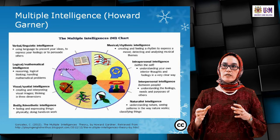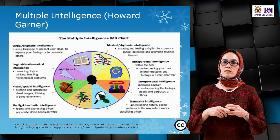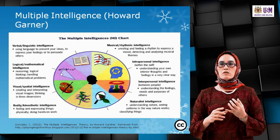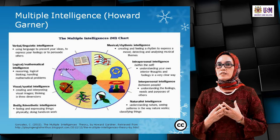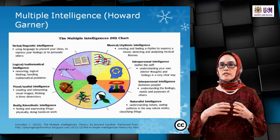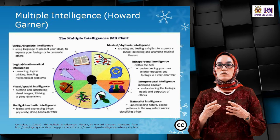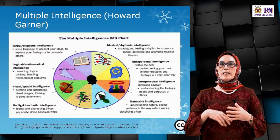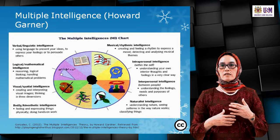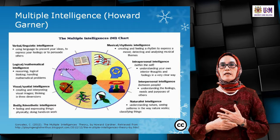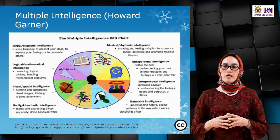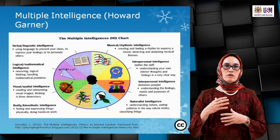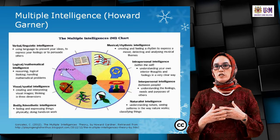Intrapersonal intelligence refers to understanding one's own thoughts and feelings — intra means within the self. Interpersonal intelligence means understanding someone else's needs and feelings — inter means between. Naturalistic intelligence involves understanding nature, seeing the patterns of how nature works, and classifying things. Once you understand a person's intelligence, you will understand why they behave or learn in a particular manner — giving you a good base of learning background.